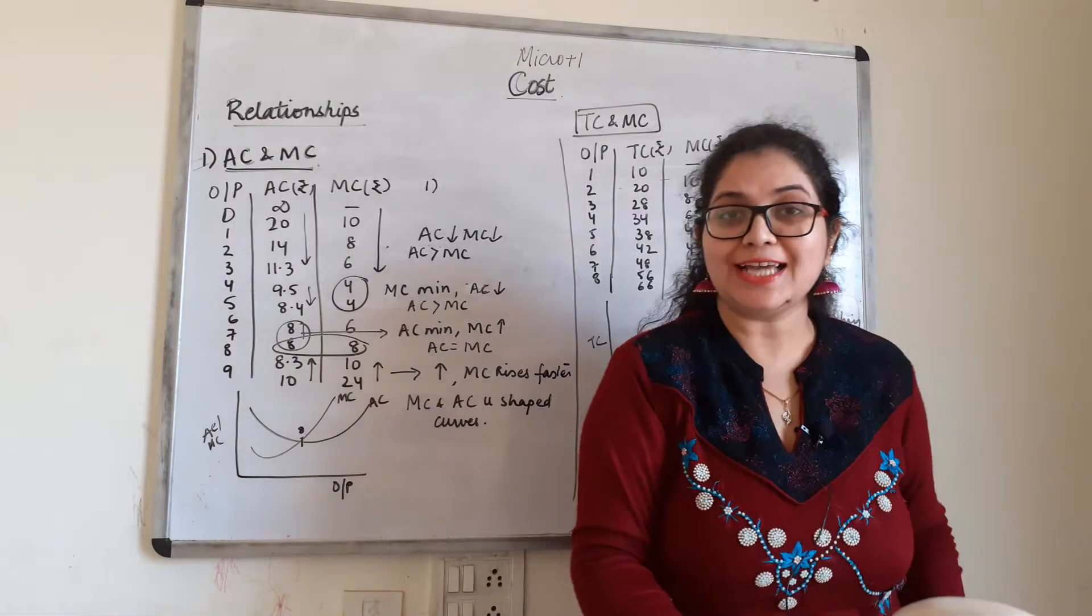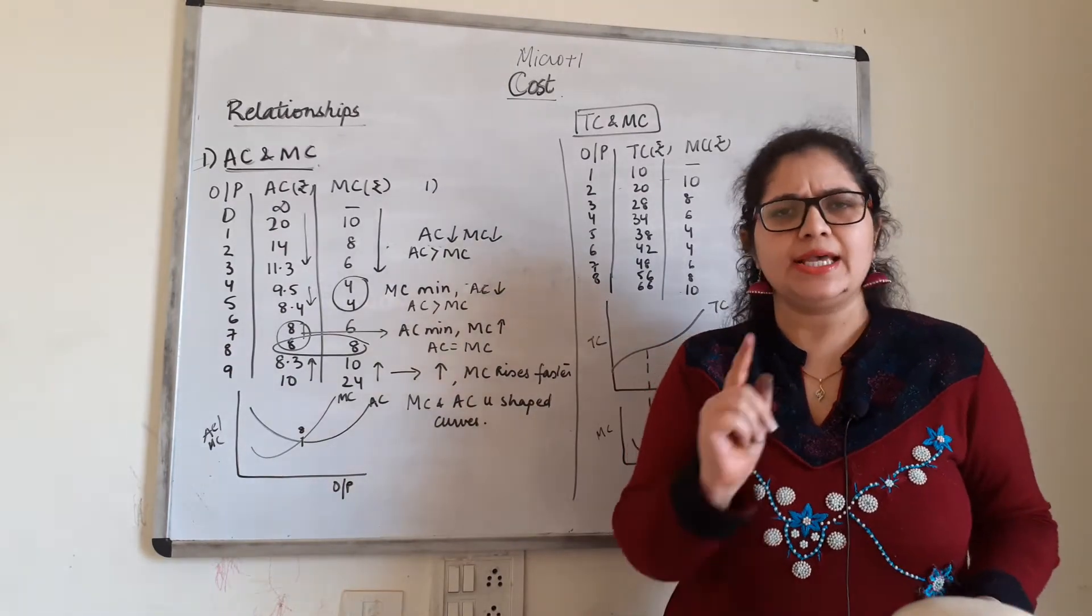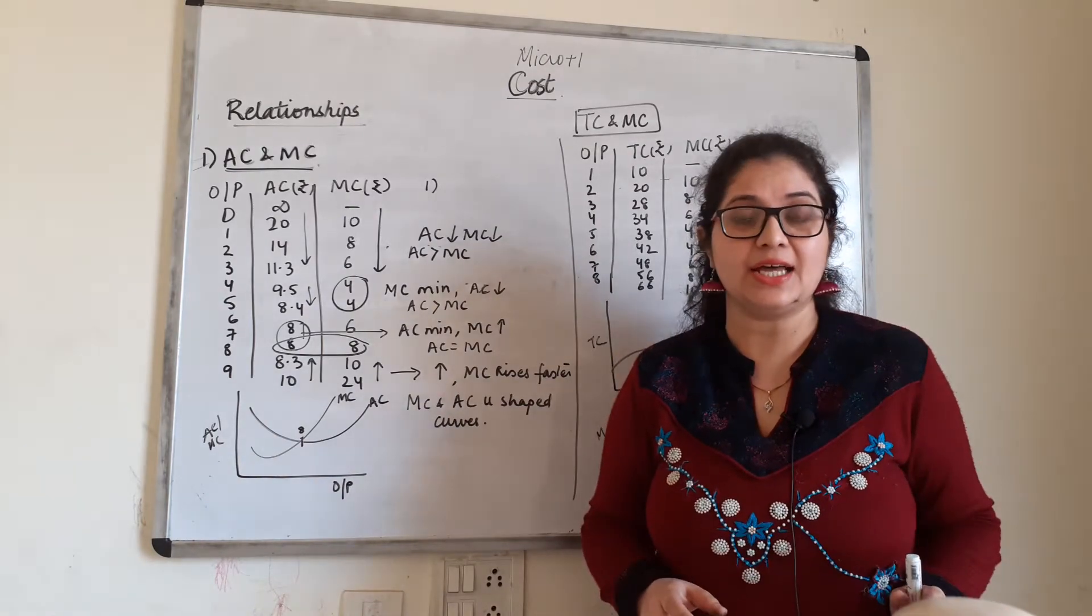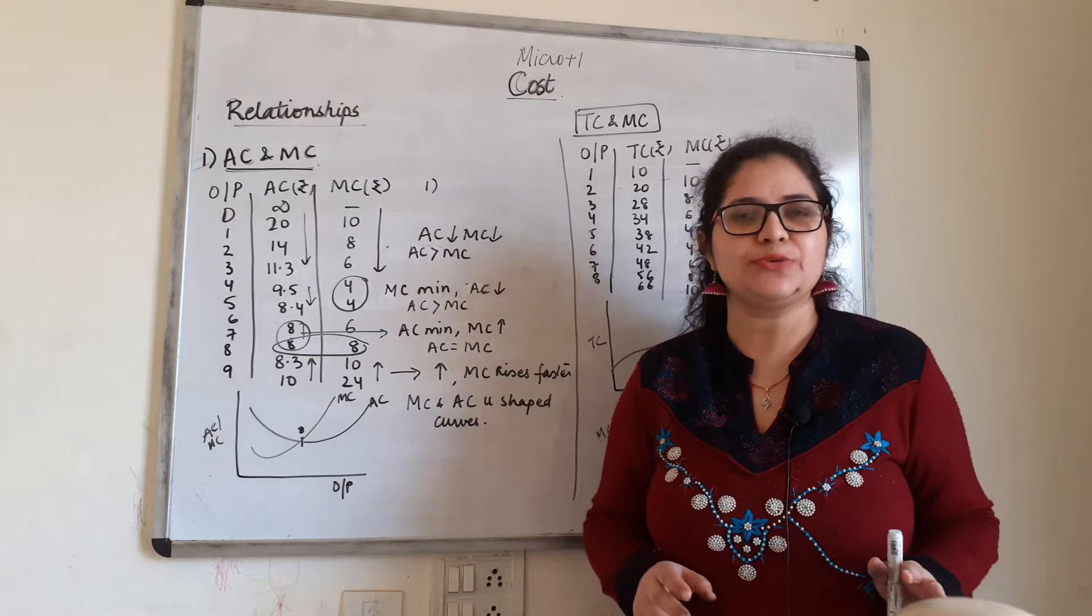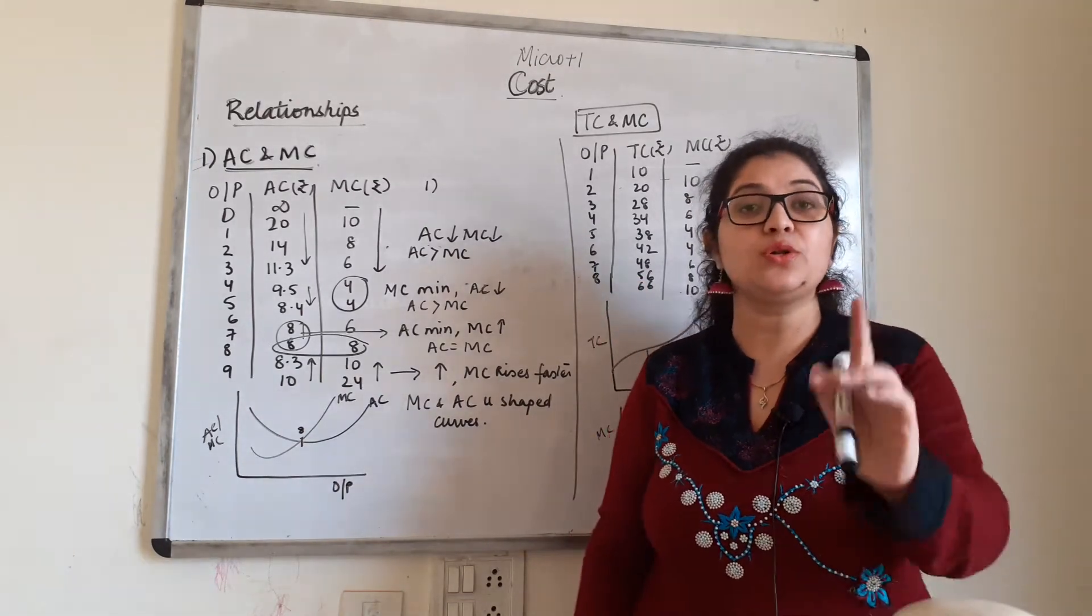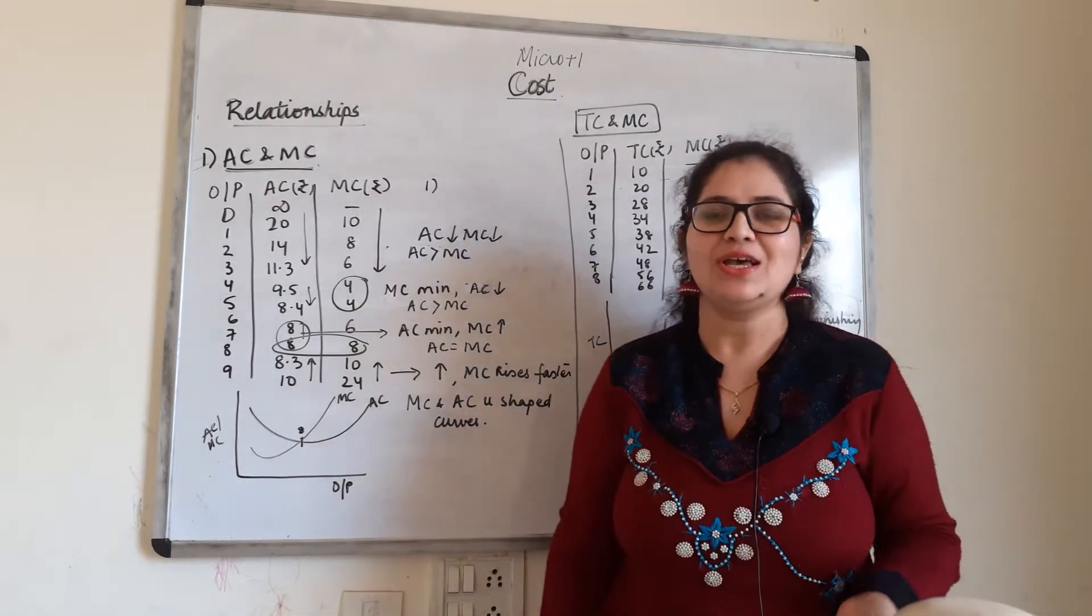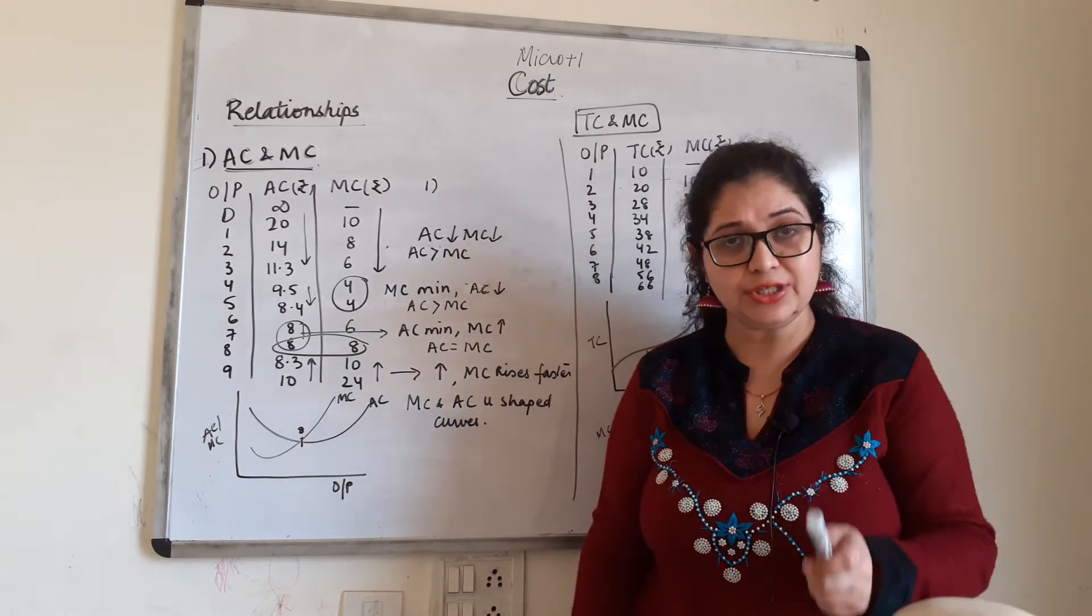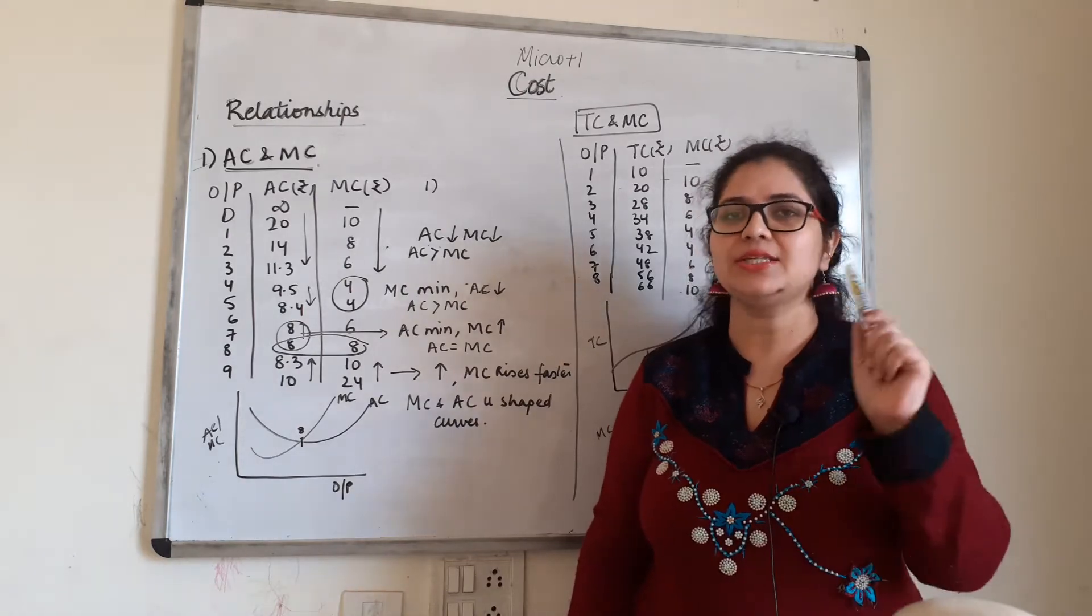So, we have come to the last part of the chapter on cost where we are going to discuss the relationship questions. I will do a video where we will do cost numericals because cost numericals are very important. In today's video, we will tackle two relationships: AC and MC (average cost and marginal cost) and total cost and marginal cost. Welcome everyone, you are watching EcoWorld Digital Classes. This is microeconomic series for standard 11 and we are doing chapter cost.